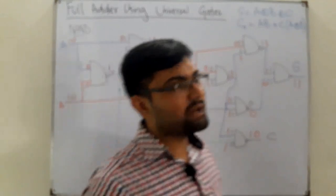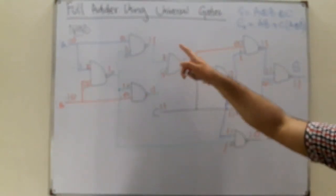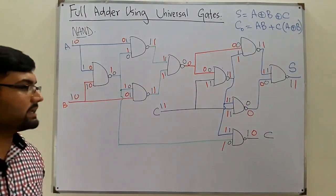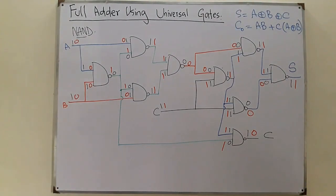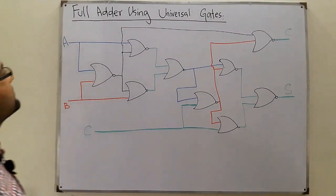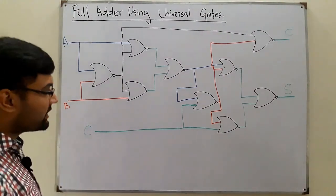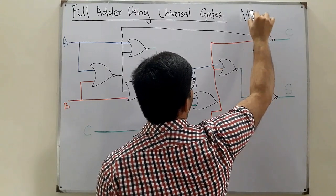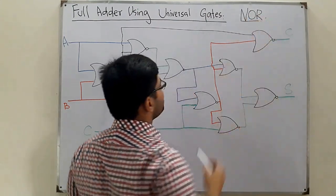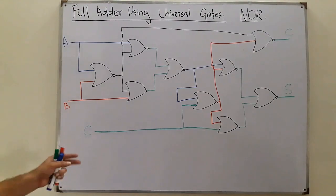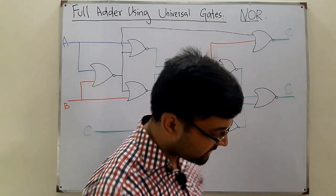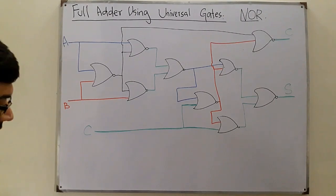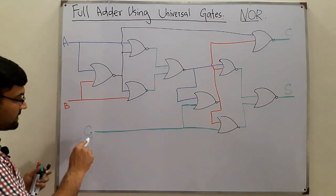That's about the NAND gate. Next we look at the full adder using NOR gates. That is a little more complex and is not used widely — the NAND gate circuit is used most often. But here is the circuit diagram for the full adder using NOR gates; it's a bit more complicated.